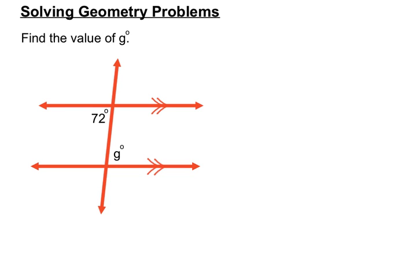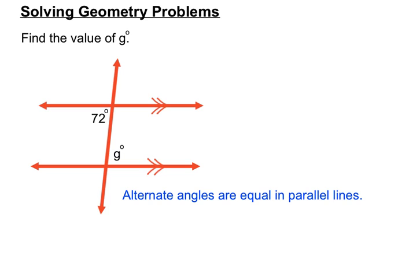Now we're using our parallel line rules to find the values of missing angles. What position are these in? We've got one on this side of the transversal and the other one on the alternate side of the transversal. Yes, it's alternate angles being equal in parallel lines — these are in an alternate position. So if they're equal, G is going to equal 72.